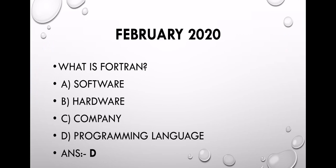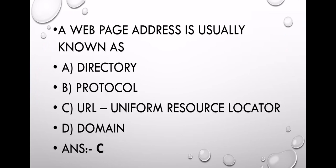What is Fortran? A) Software, B) Hardware, C) Company, D) Programming Language. What is the correct answer? Option D is Programming Language. Fortran is a programming language.